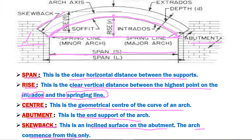Here it is an inclined portion on the abutment. The inclined surface on the abutment is named skewback. Skewback is the inclined surface on the abutment from where the arch commences.